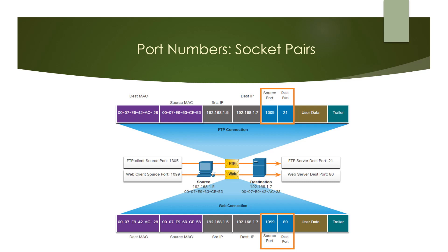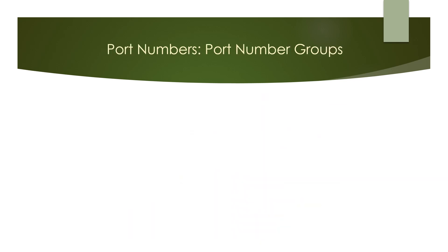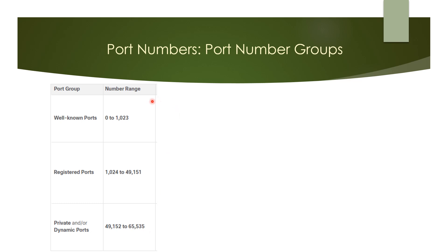The transport layer keeps track of the port and the application that initiated the request so that when a response is returned, it can be forwarded to the correct application. The Internet Assigned Numbers Authority (IANA) is the standards organization responsible for assigning various addressing standards, including the 16-bit port numbers. It has divided the range of numbers into three main port groups. The well-known ports range is reserved for common or popular services and applications such as web browsers, email clients, and remote access. Defining well-known ports for common service applications enables clients to easily identify the associated services required.